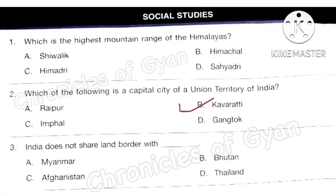Question 3: India does not share a land border with which country? India shares its land borders with seven countries: Pakistan and Afghanistan in the northwest; China, Nepal and Bhutan in the north; and Myanmar and Bangladesh in the east. Towards the south, India has two neighboring island countries: Sri Lanka and Maldives. The correct answer is option D: Thailand.